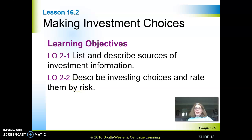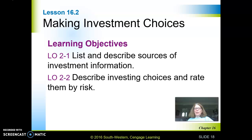We have now finished 16.1, which was basics of investing. We covered things like why it's important to invest — to beat inflation, to build wealth, for fun and a challenge. We talked about diversification, investing risk, and the rule of 72. Now we're going to get into investment choices: listing and describing sources of information so we can make good choices, and describing those choices rated by risk.